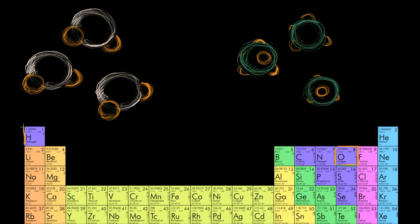Oxygen is a good bit more electronegative than hydrogen. And so in this water molecule, the electrons in the covalent bond between the hydrogen and the oxygen are actually going to spend more time around the oxygen. They're going to spend more time around here because oxygen likes to hog the electrons more than the hydrogen does. And so it would form a partial negative charge at the side of the molecule away from the hydrogens, and a partial positive charge on the sides where the hydrogens are.